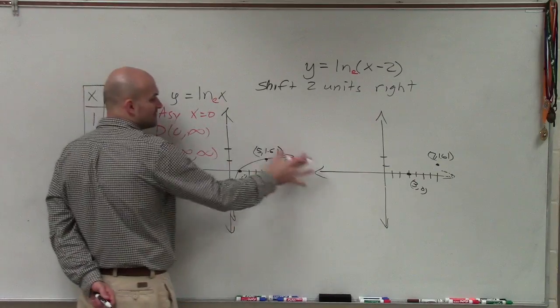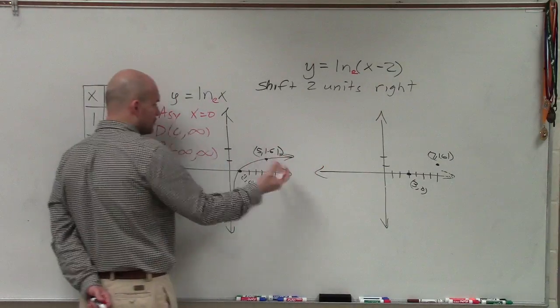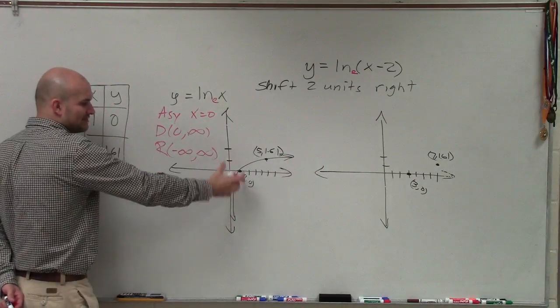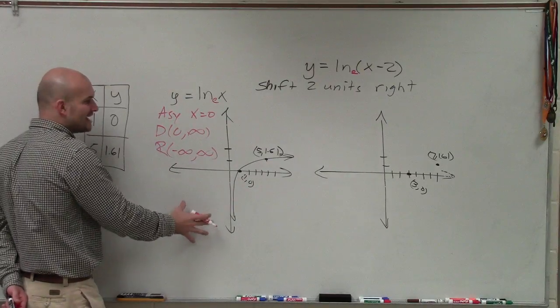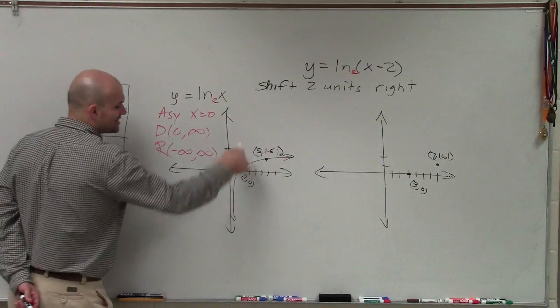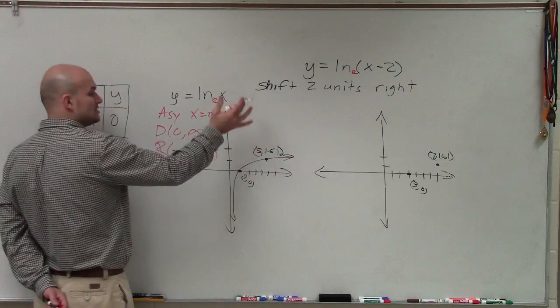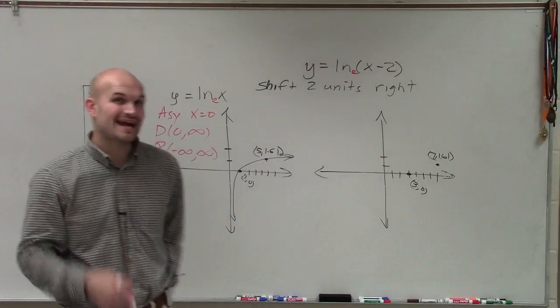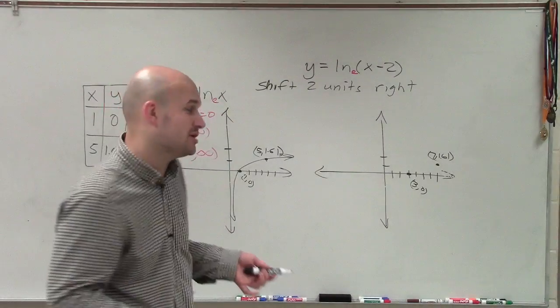Because you can see the domain is the set of all x values that are going to make this equation true. We don't have this graph crossing over 0 into the negative values. So my domain is only contained from values that are going to be positive. However, the range, this graph decreases and also increases to infinity and negative infinity. So therefore, the range is going to be all real numbers.